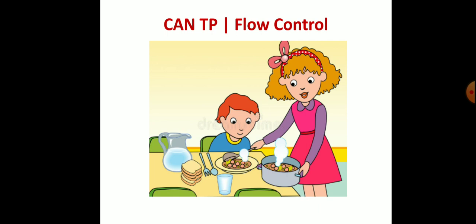This is a simple story: a mom is serving food to a girl, and she is eating. Imagine she completely eats the food and then wants more — the mom needs space to put more food on the plate. This concept exactly relates to flow control. This is a simple layman example — you don't need to be an automotive engineer. Even a school student can understand flow control and CAN transport protocol from this.